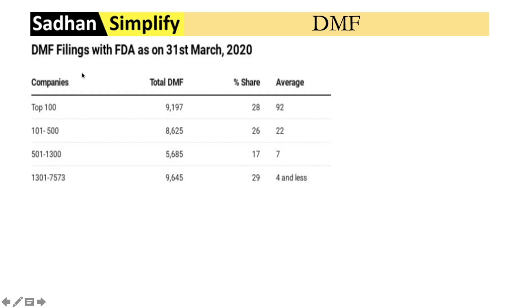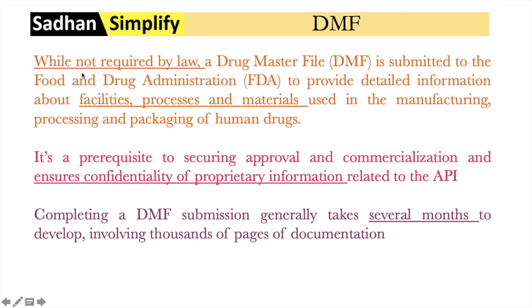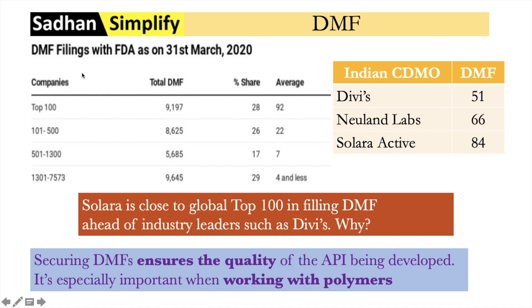Looking at the top 100 API manufacturers, on average they file 92 DMFs. Among Indian CDMOs, the biggest names are Divi's Labs, Neuland Labs, and Solara Active. Divi's Labs has 51 DMFs filed, Neuland Labs has 66, and Solara has 84 DMFs. Even though DMF filing is not a regulatory requirement, companies invest so much effort because it establishes quality credentials — drug innovator companies can openly review your processes and ensure a certain level of quality. If you have a DMF filed, you will get further business, making it economically rewarding.